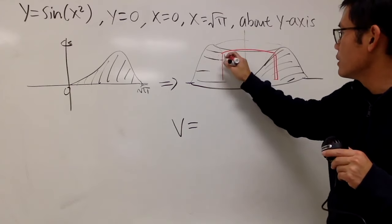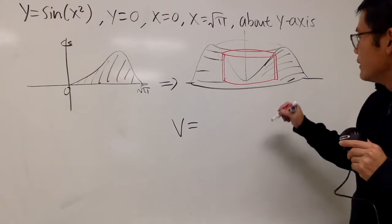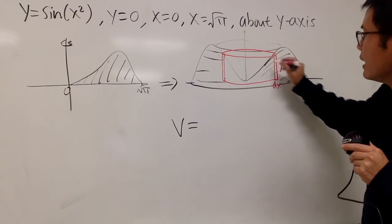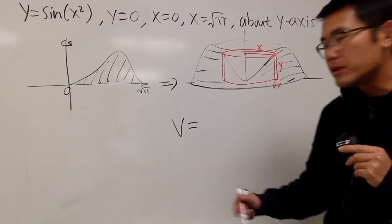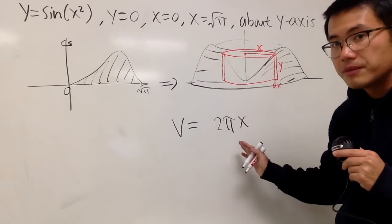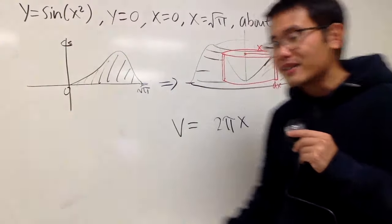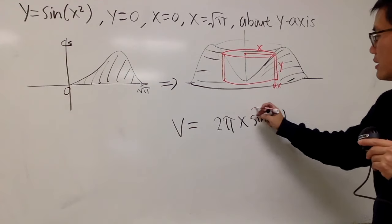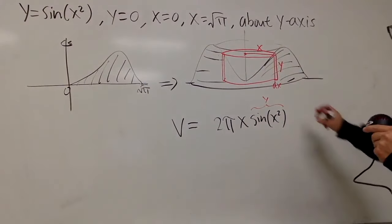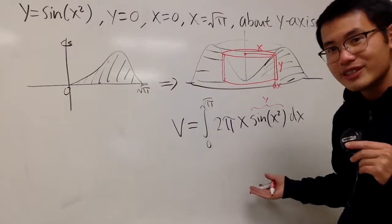The thickness is dx because we're in the x world. The height is y, and the radius is x. Using the formula 2π times radius, which is x, times the height y — but y must be expressed in the x world, so replace y with sin(x²). That's the height of the rectangle when you cut and open the cylinder. Multiply by dx and integrate from 0 to √π. The shell method is really cool.